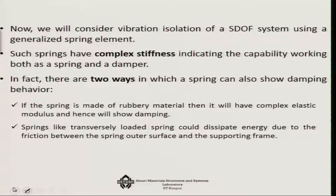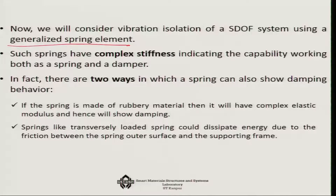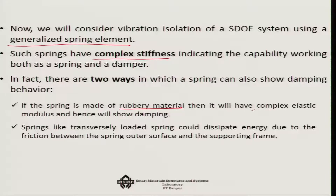Now we will consider vibration isolation of a single degree-of-freedom system subjected to an isolator which is a generalized spring element — that is, a spring plus damper. Such a system has a complex stiffness K*: it bears the load by displacement while also acting partially like a damper. There are two ways a spring can show damping behavior. If the spring is made of rubbery material, it will have a complex elastic modulus, and the imaginary part of that complex elastic modulus represents the damping.